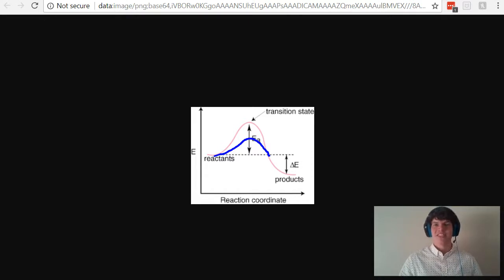By decreasing the activation energy, the enzyme causes the reaction to occur more quickly. In contrast, the thermodynamics of this reaction are not being affected. The reactants and the products still have the very same energy levels that they had before the addition of the catalyst.